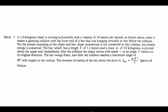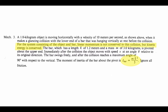Looking at the text of the problem, we get our values reproduced — the one kilogram object makes a glancing collision at the lower end of a bar that was hanging vertically. They tell us what the moment of inertia of the bar is when pivoting around its one end, which is good since most of us haven't memorized that. They also state: for the system consisting of object and bar, linear momentum is not conserved in this collision, but kinetic energy is conserved.